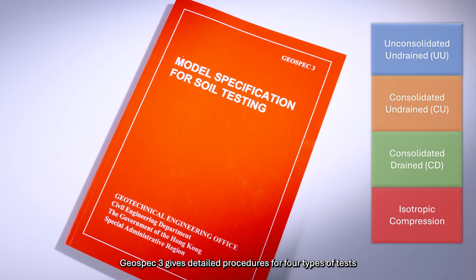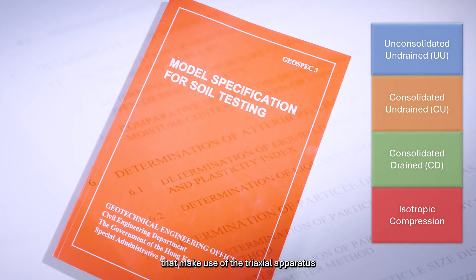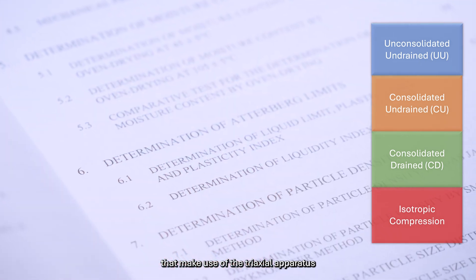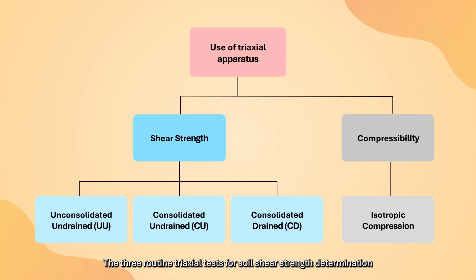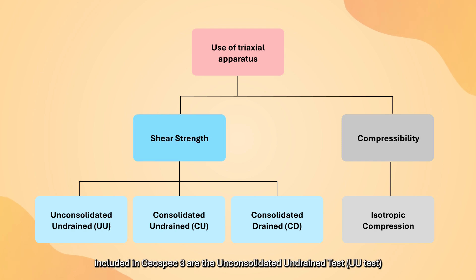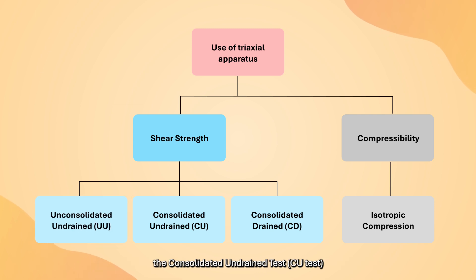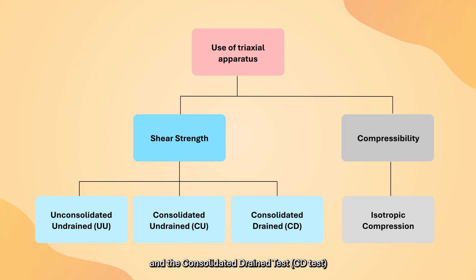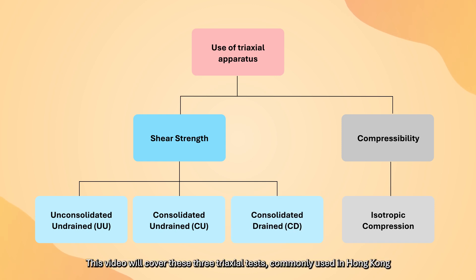GeoSpec 3 gives detailed procedures for four types of tests that make use of the triaxial apparatus. The three routine triaxial tests for soil shear strength determination included in GeoSpec 3 are the unconsolidated undrained (UU) test, the consolidated undrained (CU) test, and the consolidated drained (CD) test. This video will cover these three triaxial tests commonly used in Hong Kong.